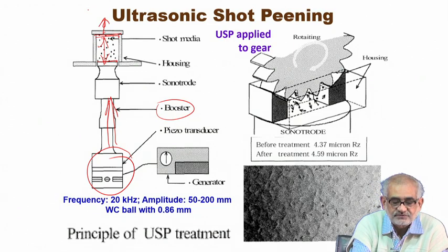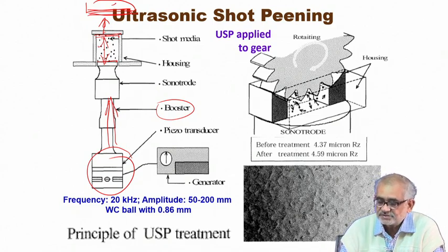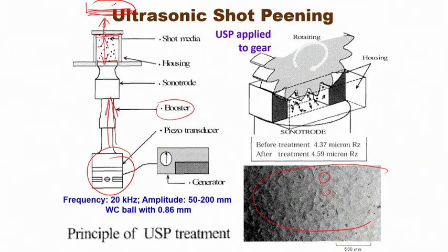The shots come out and this is where the mechanical deformation is created. The surface after deformation may show certain undulations — this waviness is because of the impact of those shots. A large gear piece, for example, can be treated by ultrasonic peening when you expose it to the opening through which the ultrasonic wave can hit the gear tooth and create the required state of stress.